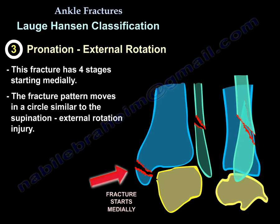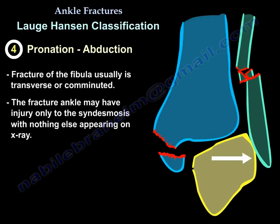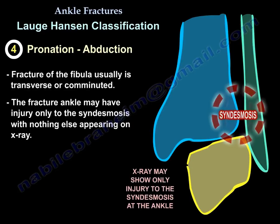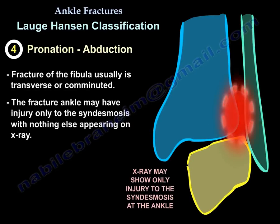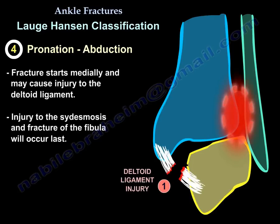The fourth type is the pronation-abduction injury. The fibular fracture is usually transverse or comminuted. The ankle may have only syndesmotic injury with nothing else visible on X-ray. This fracture starts medially with the deltoid, then progresses to the syndesmosis, and ends with the fibula — so in early stages you may not see a fibular fracture, but you will have syndesmotic injury.